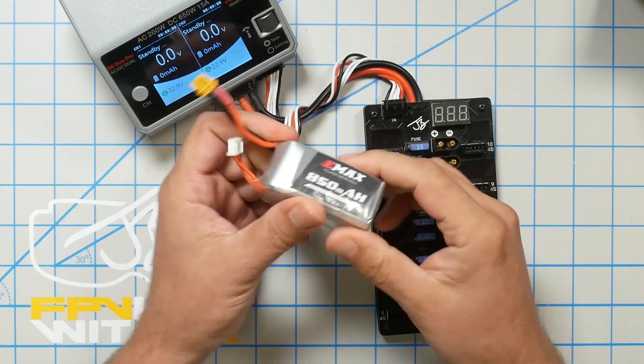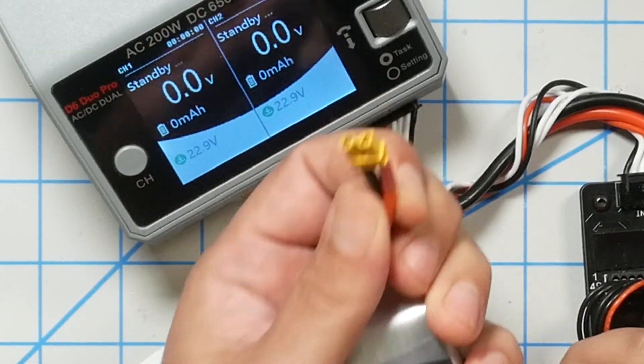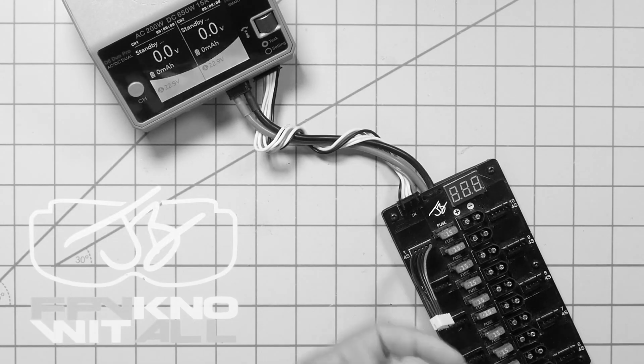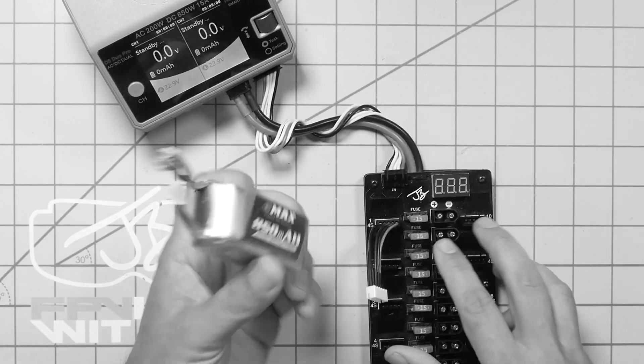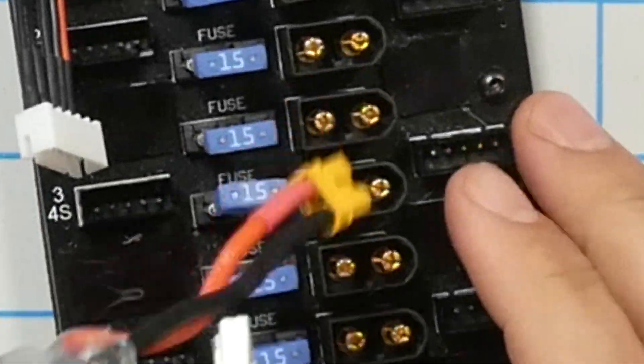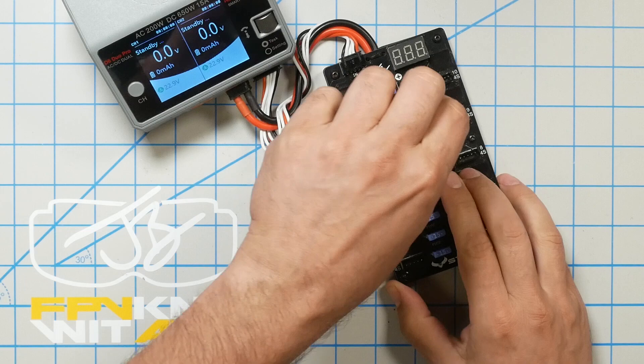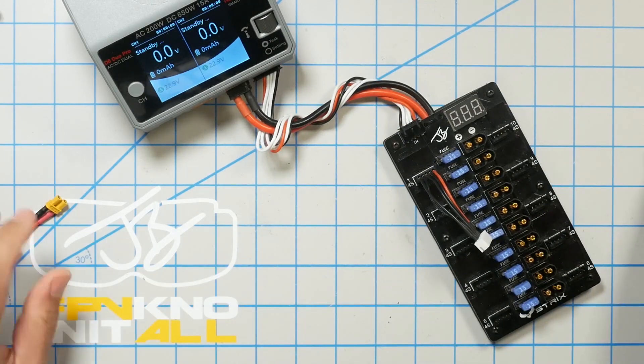Does this ever happen to you? You need to charge your XT30 battery, but you can't find any XT30 adapters, and you've only got an XT60 parallel charging board, but that won't work. Here's the solution.